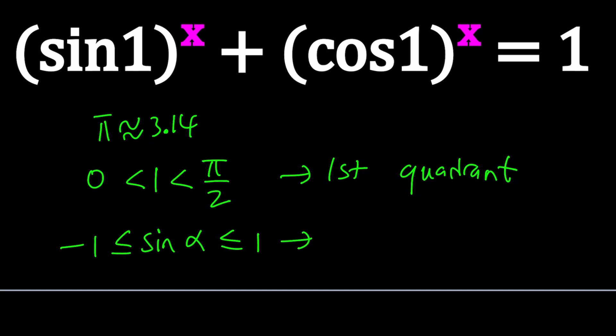This basically implies that, first of all, since we're in the first quadrant, sine and cosine are both positive, which is nice. So, this means that sine of 1 is going to be between 0 and 1. Because that's the first quadrant. Again, for the same reason, cosine 1 is going to be between 0 and 1.